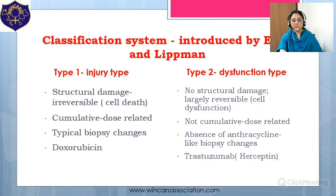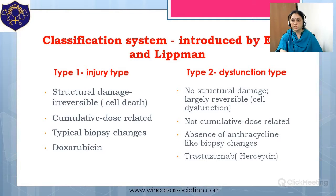Doxorubicin is a classical model for Type 1, and Trastuzumab (Herceptin) is the ideal model for Type 2 dysfunction. In Type 1, there is structural damage — cell death — and it is irreversible. Typical biopsy changes are present and it is dose-related. In Type 2, there is only cell dysfunction, no structural damage, and hence it is largely reversible. Typical anthracycline-induced biopsy changes are not seen, and this is not dose-related.